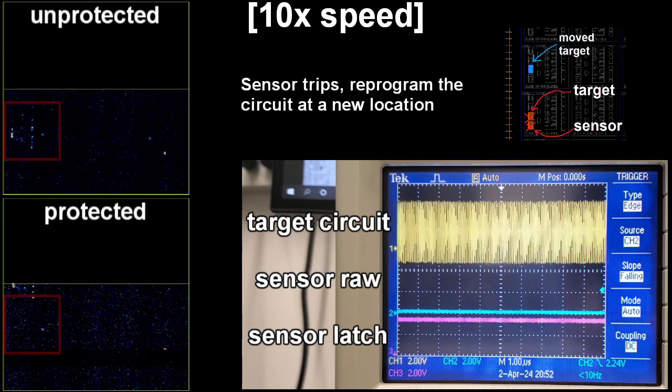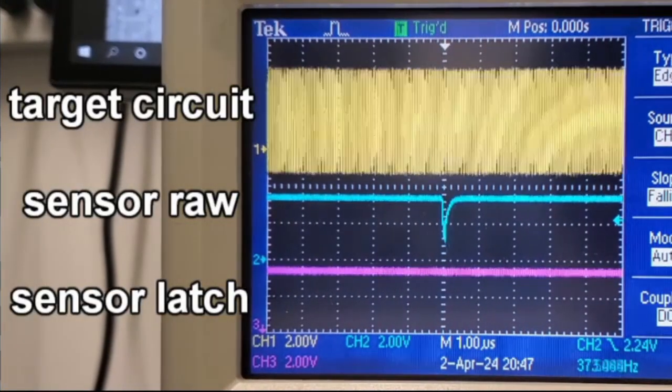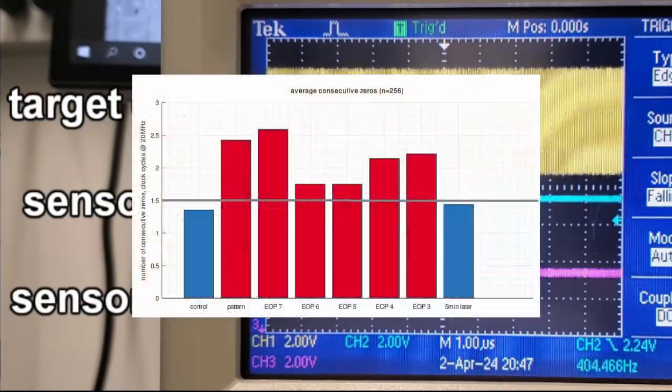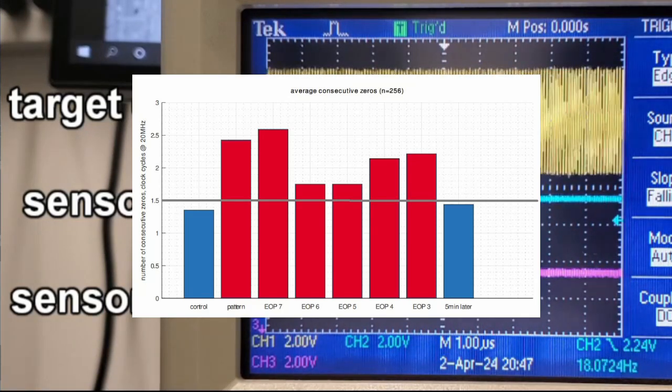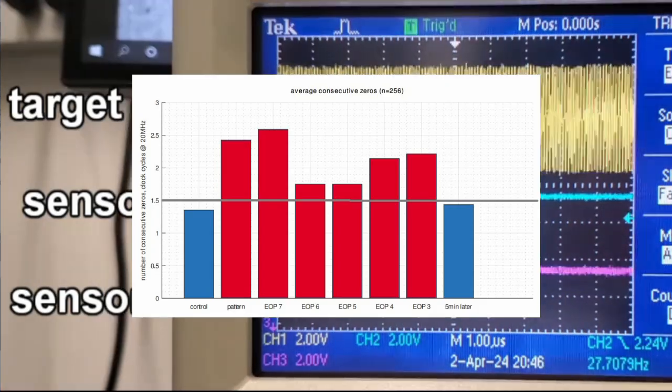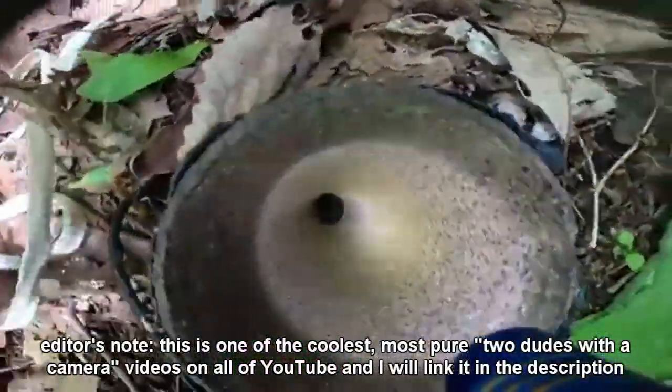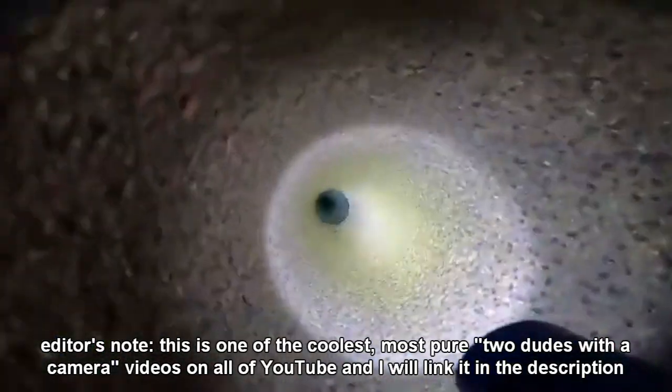We detect the laser by seeing if the number of zeros in a fixed period of time exceeds a certain threshold. It's not perfect since there's the potential for false positives due to various environmental factors, so there's a rabbit hole of statistical analysis to go down in the future.